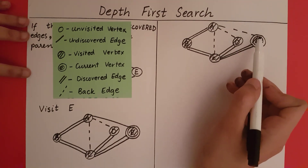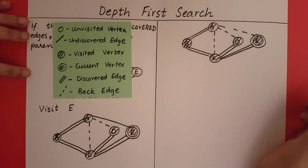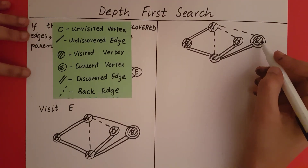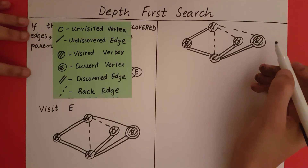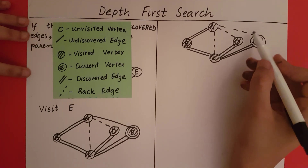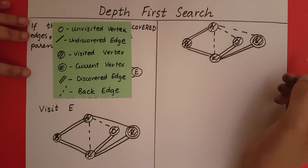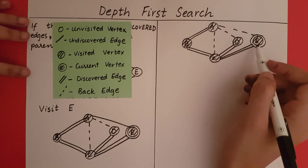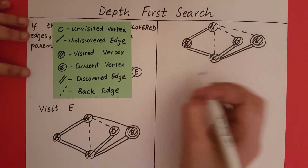Now I have made the edge between E and A a back edge. Now E is my current vertex. There are no edges from E that are undiscovered — E has no undiscovered edges. So what must we do? We need to backtrack.